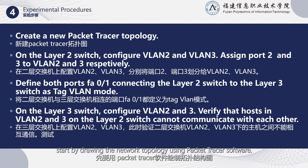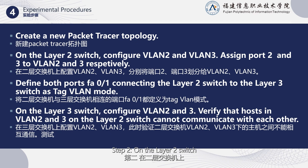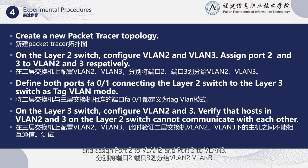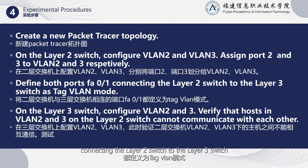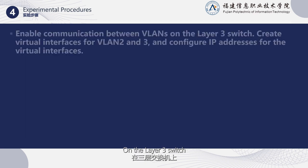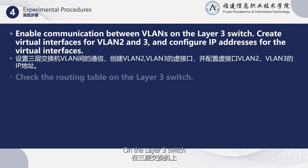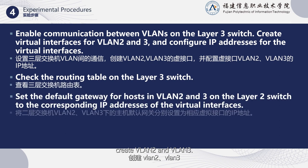The steps for the experiment are as follows. Step 1: start by drawing the network topology using Packet Tracer software. Step 2: on the Layer 2 switch, configure VLAN 2 and VLAN 3, and assign port 2 to VLAN 2 and port 3 to VLAN 3. Define port F0/1 connecting the Layer 2 switch to the Layer 3 switch as a TAG VLAN mode, in other words, trunk mode. On the Layer 3 switch, create VLAN 2 and VLAN 3.